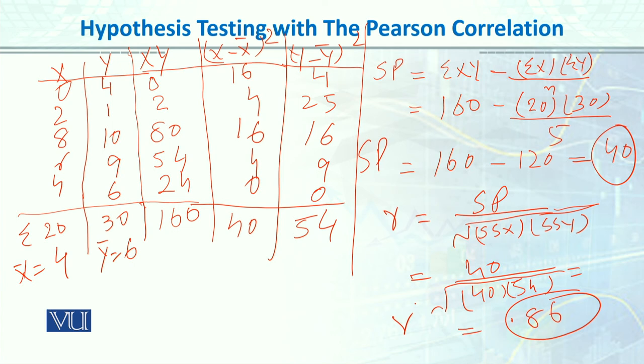The correlation value is 0.86, which means there is high positive correlation between the two variables. 0.86 is pretty high correlation because the maximum perfect correlation is 1. Now we'll compare it with our critical value.